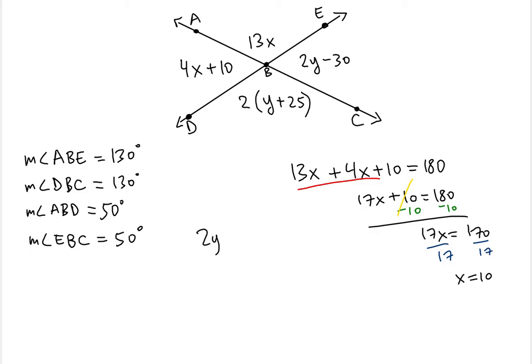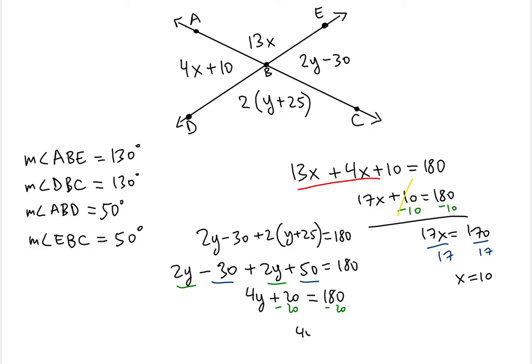We know that 2y minus 30 plus twice of y plus 25 should be equal to 180 degrees because these two are supplementary. So now like terms would be 2y minus 30 plus 2y plus 50 is equal to 180 degrees. So these two are like terms. They add up to 4y. And these two are like terms, so that happens to be 20. That would be subtracting 20 on both sides. So we would get 4y is equal to 160 divided by 4. Y would be 40 degrees.